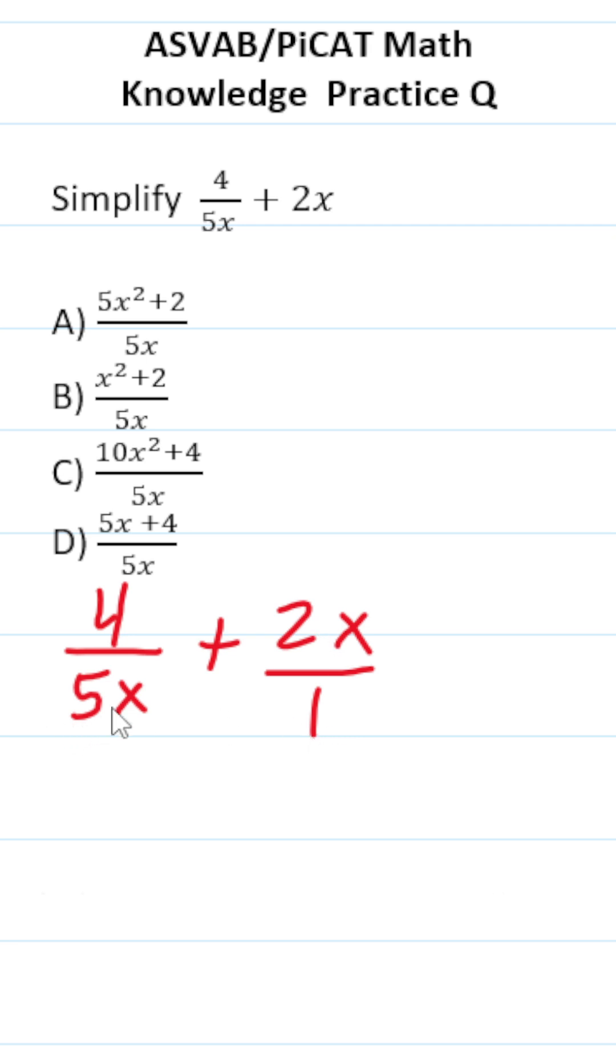To write this 2x over 1 with the denominator of 5x, I have to multiply its denominator as well as its numerator by 5x. So this becomes 4 over 5x plus what's 1 times 5x? That's just 5x.